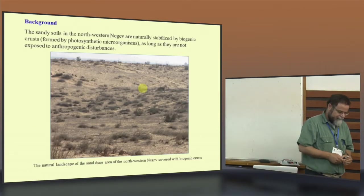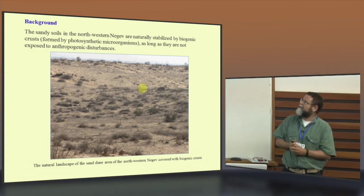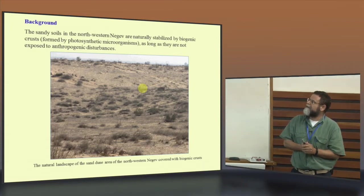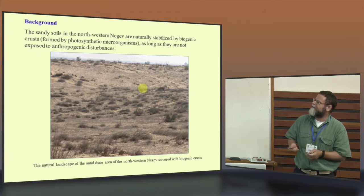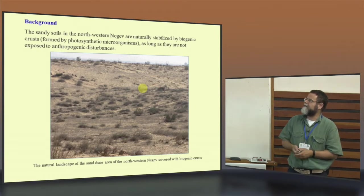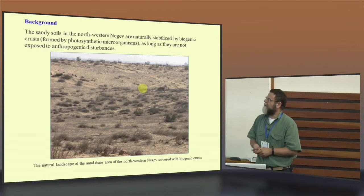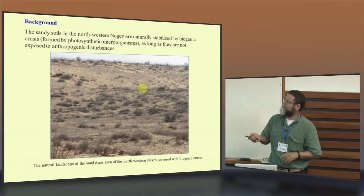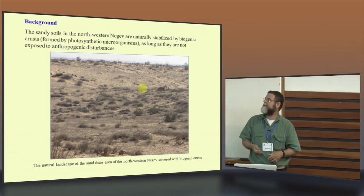I need to give you some background why we did this research. In the northwestern Negev, the area is actually looking like that. It's sandy area, stabilized by a few shrubs, about 10% shrubs cover, and 90% of biogenic crust.